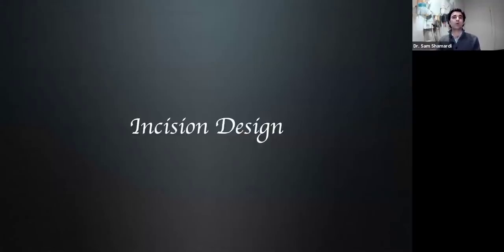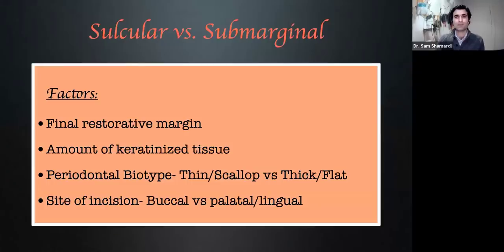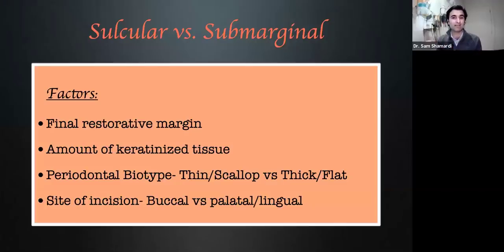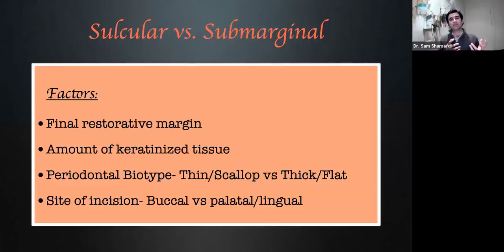Now let's talk about some of the surgical procedure itself in terms of incision design. There are basically two different types of incisions you'll need to understand. One is known as sulcular incisions. The other is known as the submarginal incision. The factors determining when we do one versus the other are: where is that final restorative margin going to end, what is the amount of keratinized tissue we are beginning with, the periodontal biotype — thin scallop versus thick flat — and where the actual site of the incision is: are we looking at the buccal surface or the palatal or lingual surface?